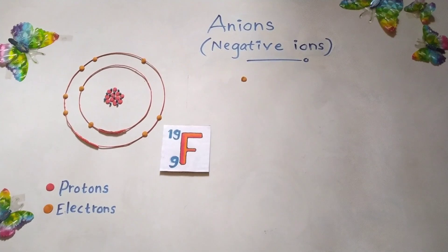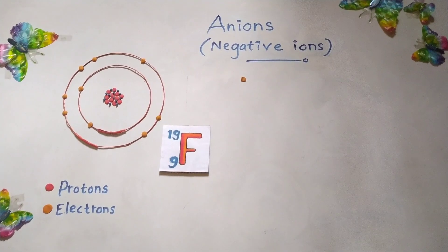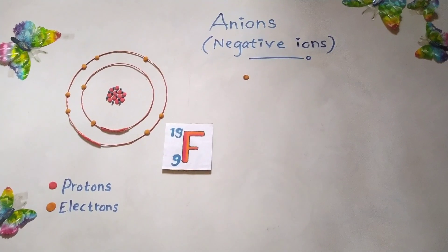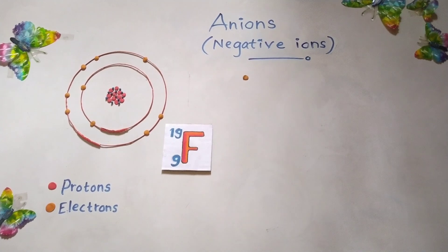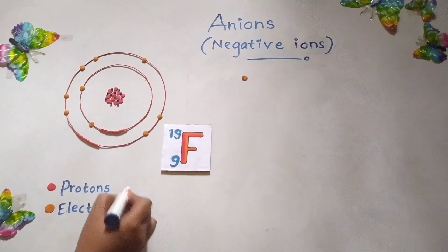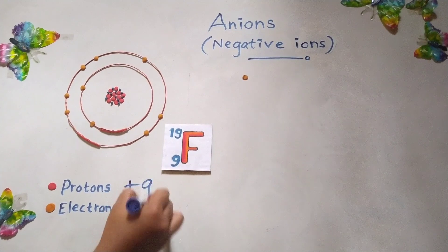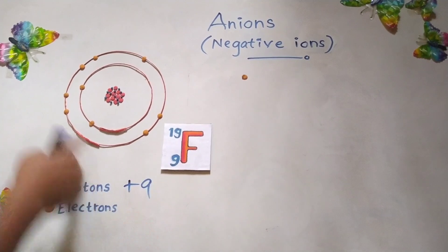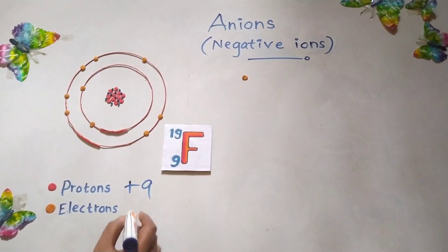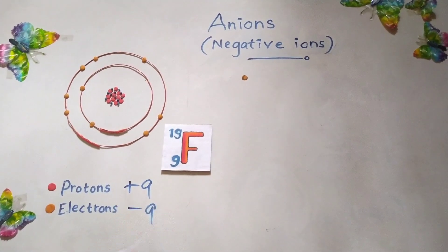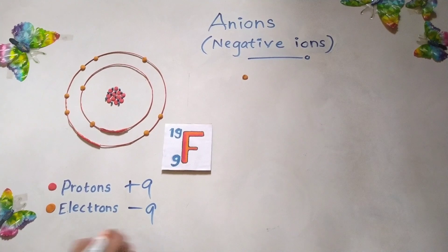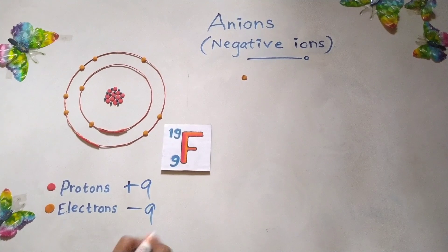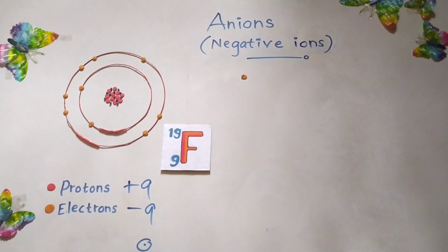Now look at this one. This is the fluorine atom which I described earlier. If you calculate the number of protons, that is positive 9 as earlier. The number of electrons — the final charge is negative 9. So the final charge is 0 as described earlier. That is a neutral atom at the beginning.